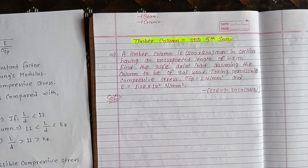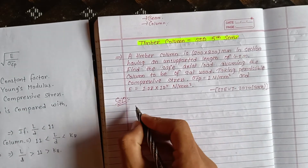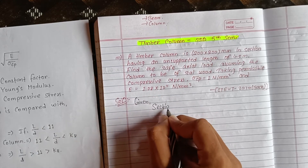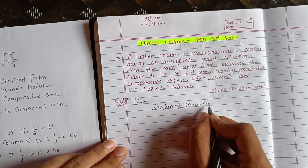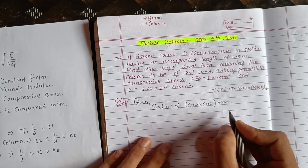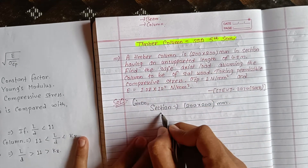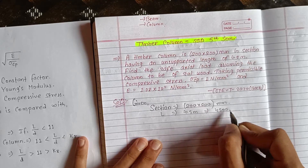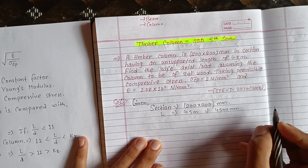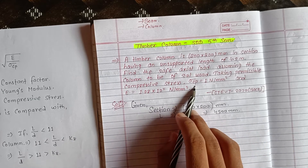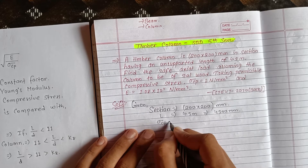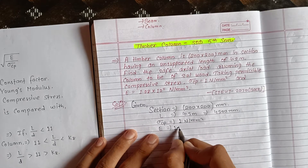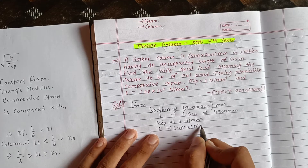Now we have to solve this problem. The section is 200 × 200 mm. The length L is equal to 4.5 meters, which is 4500 mm. σcp is equal to 1 N/mm² and E is equal to 1.08 × 10⁴ N/mm².